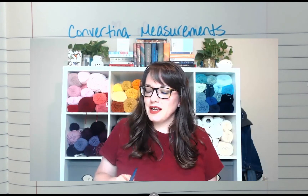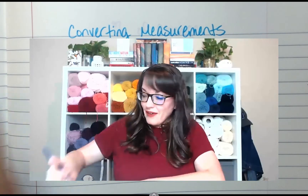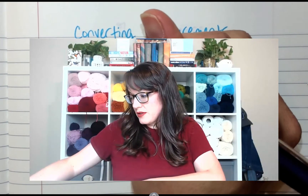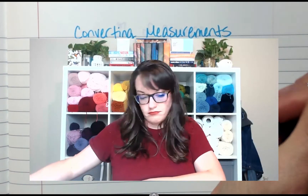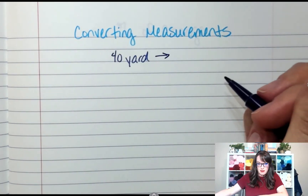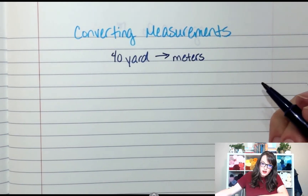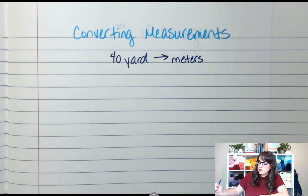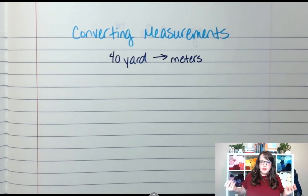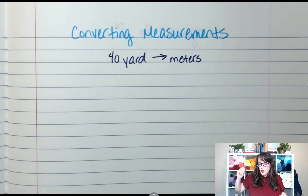For example, if I am in the United States and I am going to run a 40-yard dash and I want to invite some people from England — well, in England they use meters, and if you tell them yards they probably won't know what you mean. So how do you get from yards to meters? You're going to need what's called a conversion factor.